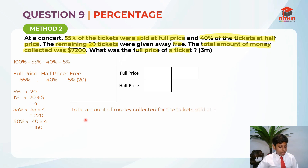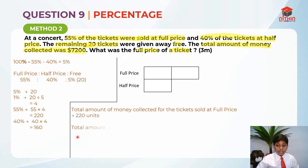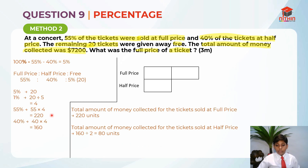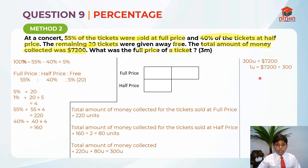The full price tickets remain at 220 units. Instead of multiplying by 2, this time I'm going to take the full price as 1 unit and the half price as half a unit. So I take 160 divided by 2, which gives 80 units. The total amount of money collected is 220 units plus 80 units, which equals 300 units. So 300 units equals $7,200. We find 1 unit: 7,200 divided by 300 equals $24. The full price ticket is 1 unit, and 1 unit equals $24.